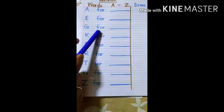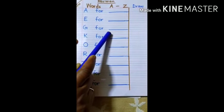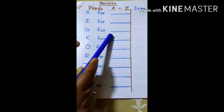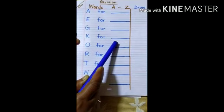G for grapes. G R A P E S, grapes. K for kite. K I T E, kite.